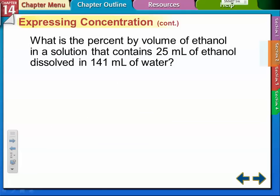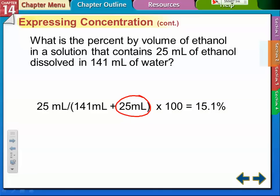We do the same thing with volume with ethanol dissolved in water. We do the 25 divided by the total volume of the whole thing, so it's 25 milliliters of ethanol divided by 141 plus 25 times 100. You should get 15.1 percent. The main thing is you have to remember to add that 25 milliliters in the volume number.